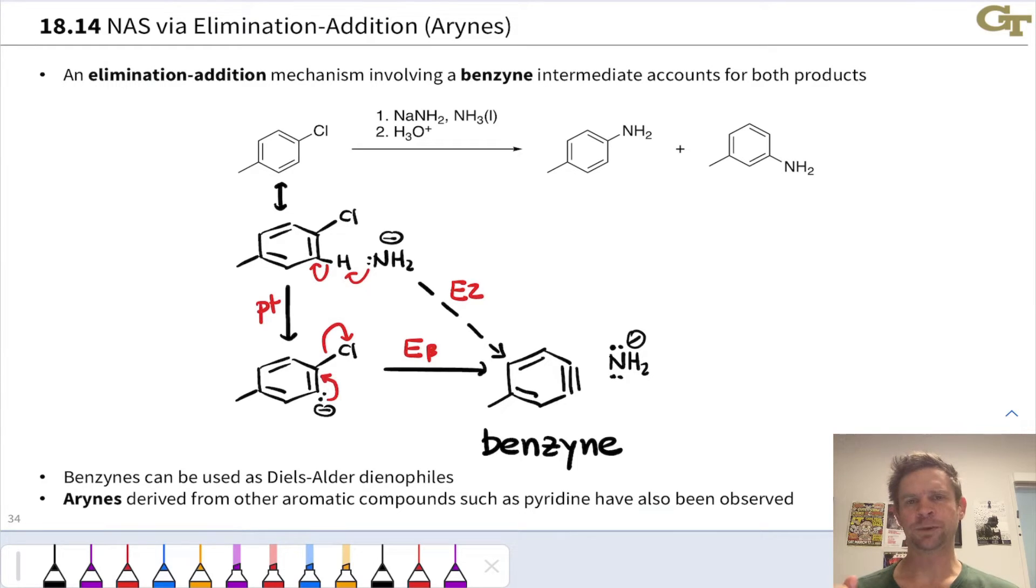This reactive intermediate with a triple bond inside the benzene ring is known as a benzyne. It's a lot like benzene. We still have, for example, aromaticity, six pi electrons, part of a conjugated system, but now we've got a triple bond and that's the origin of the yne in the name. It's a benzyne.